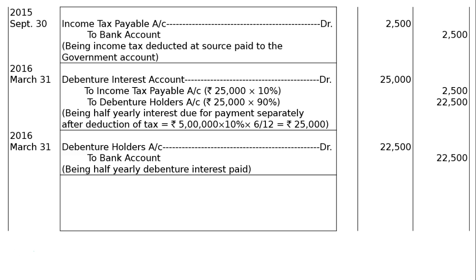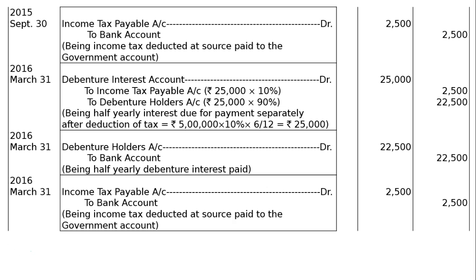Debenture Holders account debited to Bank — paying 90% to the debenture holders, Rs 22,500, being half-yearly debenture interest paid. Next, payment of income tax: Income Tax Payable account debited to Bank account, being income tax deducted at source paid to the government — Rs 2,500.